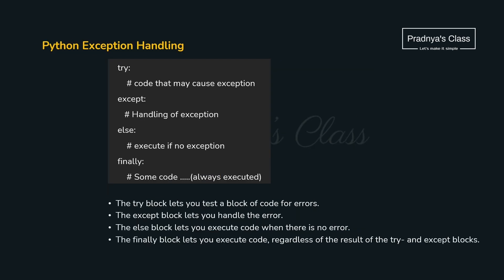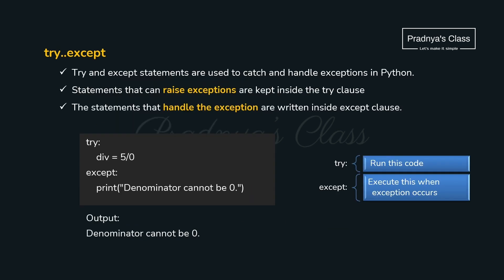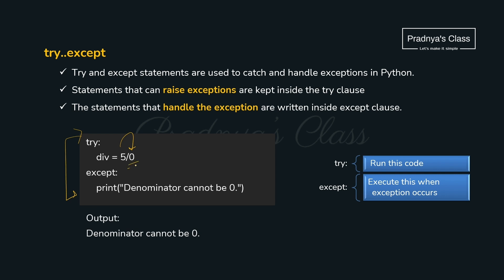We understood how we will get an exception, but it is the responsibility of the programmer to handle it so that our program will not stop abruptly. For that we will be using the try-except block. There are four different blocks for the same. The code which may raise an exception, we will write in the try block. If there is a try block, an except block is a must. In case of an exception, the control will go to the except block. In this code, the exception will raise because we are trying to divide a number by zero — look at the output, the control goes to the except block where we are printing the message.